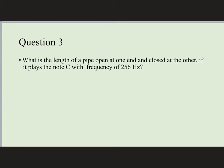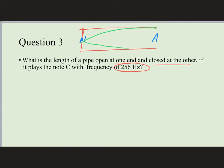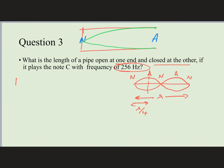Now let's look at a pipe that is open at one end and closed at the other, using the same frequency. For an open-closed pipe, there is a displacement node at the closed end and a displacement antinode at the open end, so the wave looks like half of a loop. Node to antinode is one quarter of a wave, so the length of the tube is one fourth of the wavelength for the fundamental.